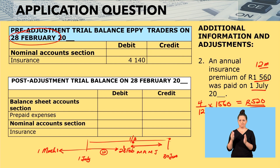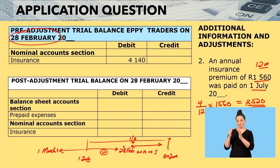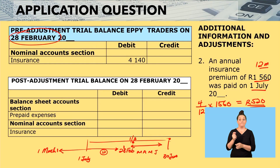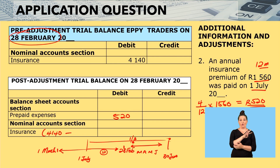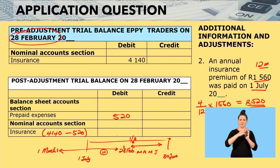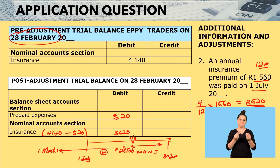This 520 is the period that has been paid in advance, so we call it a prepaid expense — because we have paid in advance. We come here and record prepaid expense on the debit side: 520, under the balance sheet accounts section. In the nominal account section, the 4,140 that we paid was more because we paid for 4 extra months, so we deduct 520 and end up with 3,620. This is what remains, and this is how you record it in your post-adjustment trial balance.